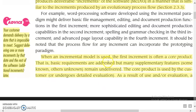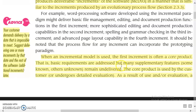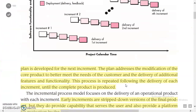When an incremental model is used, the first increment is often a core product — that is, the basic requirements are addressed but many supplementary features remain undelivered. The core product is used by the customer, and as a result of use and evaluation, a plan is developed for the next increment. The plan addresses modification of the core product to better meet customer needs and the delivery of additional features and functionality. This process is repeated following the delivery of each increment until the complete product is produced.